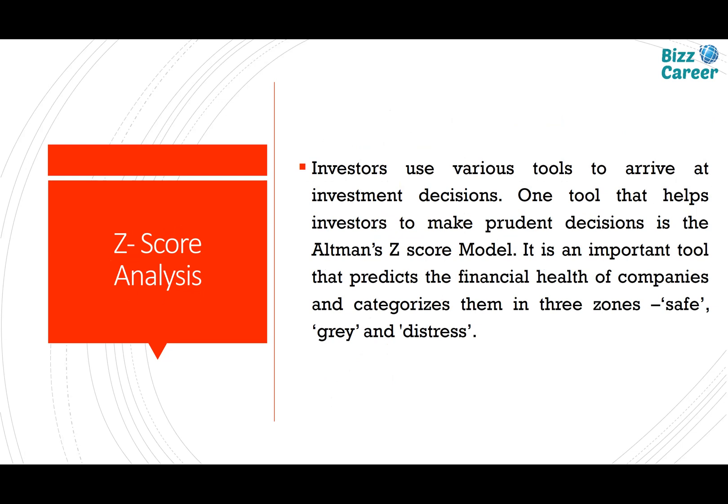Investors use various tools to arrive at investment decisions. One tool that helps investors make prudent decisions is the Altman Z-score. The Altman Z-score model is an important tool that predicts the financial health of companies and categorizes them into three zones: safe, gray, and distress.